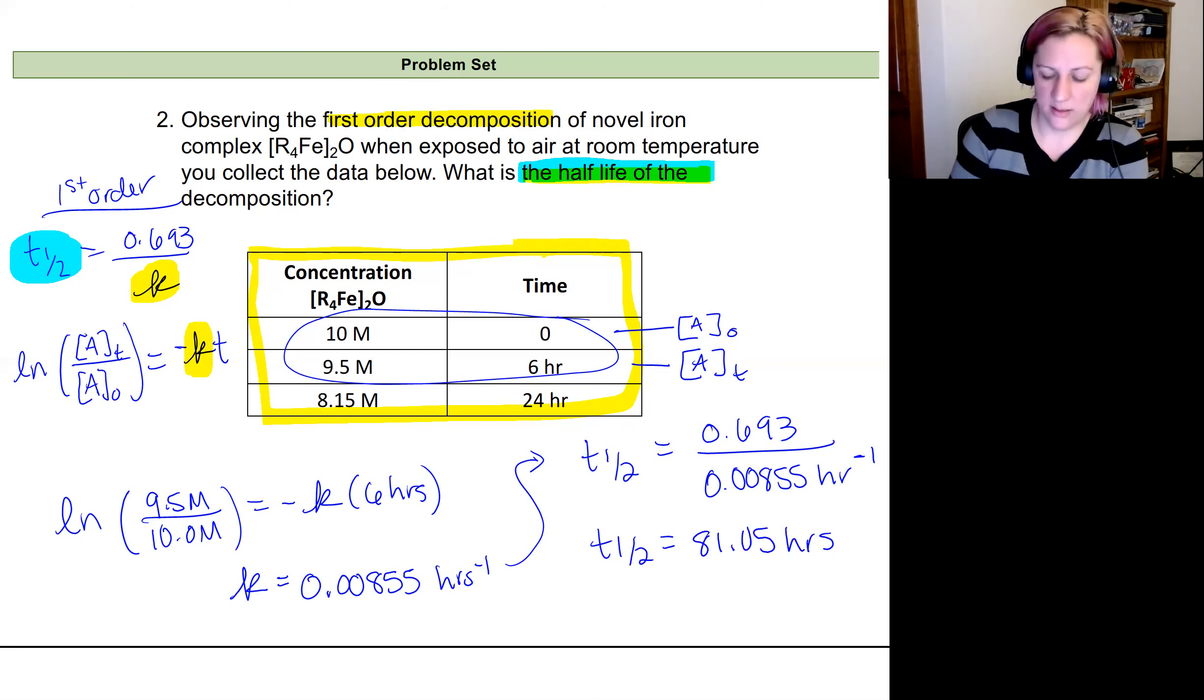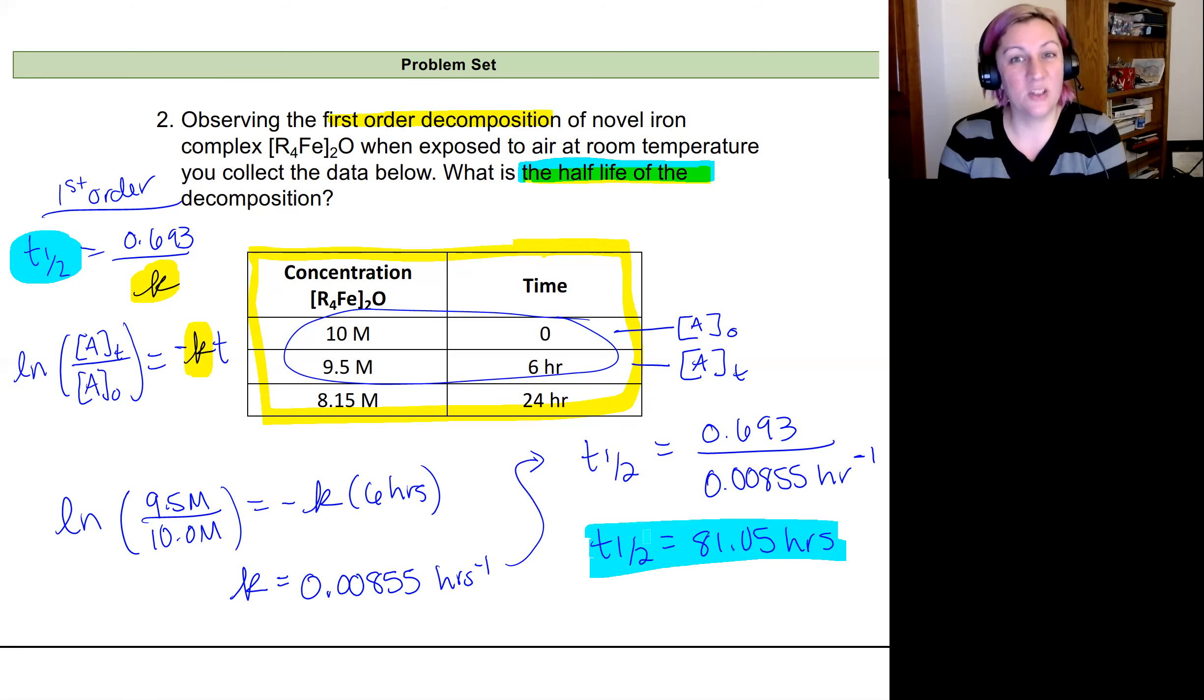That's it. And so I have to use two equations to do this, but especially knowing that it's first order simplifies this. And I'm able to use that data, the concentration versus time data to find the half-life.